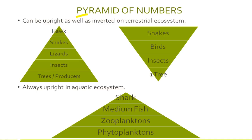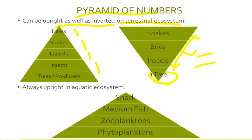Pyramid of numbers on a terrestrial ecosystem can be upright as well as inverted. It is upright when at the lowest trophic level there are producers like trees, then insects and lizards and snakes above, and animals like hawk at the highest level. It is inverted because of a single tree — on one tree there can be many species at different trophic levels, such as insects, birds, or snakes.